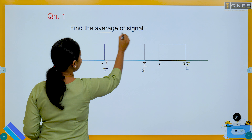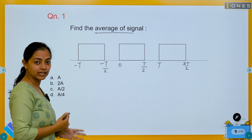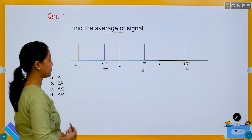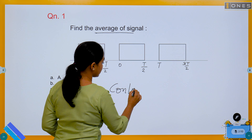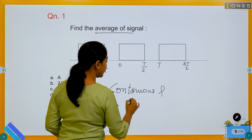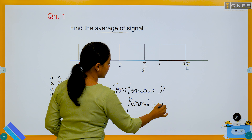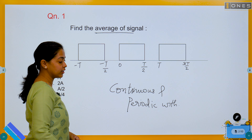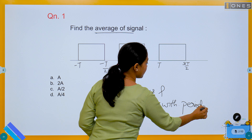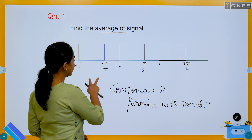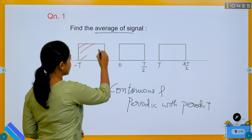The first question is: find the average of a signal. This signal is continuous and periodic with period T. This is a continuous rectangular pattern.